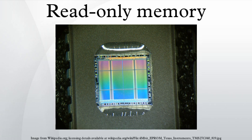ROM images: the contents of ROM chips in video game console cartridges can be extracted with special software or hardware devices. The resultant memory dump files are known as ROM images, and can be used to produce duplicate cartridges or in console emulators. The term originated when most console games were distributed on cartridges containing ROM chips, but achieved such widespread usage that it is still applied to images of newer games distributed on CD-ROMs or other optical media.